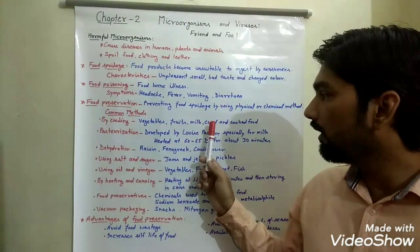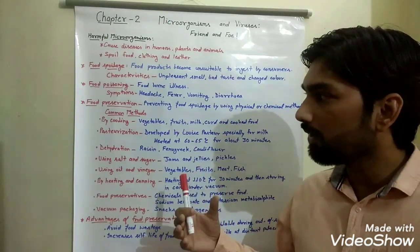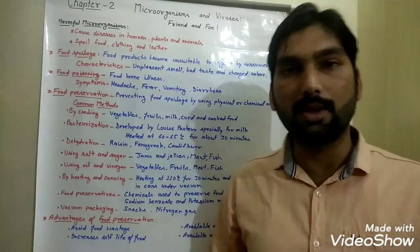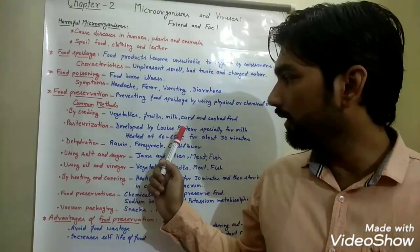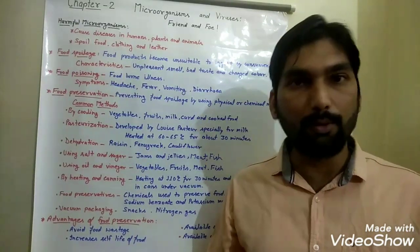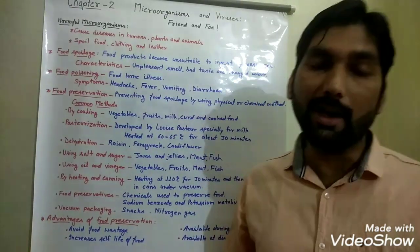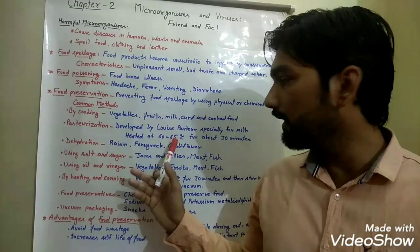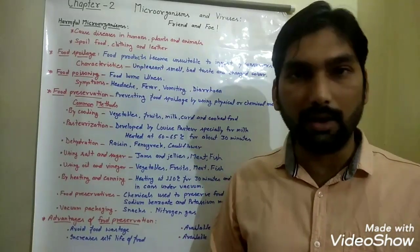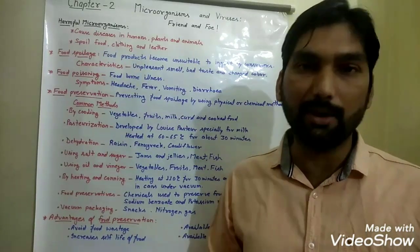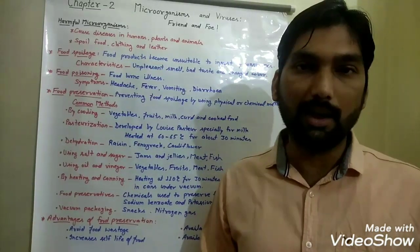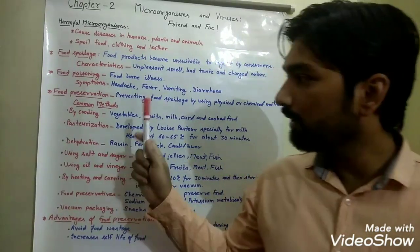Vegetables, fruits, milk, curd, and cooked food materials are protected by cooling. The next method is pasteurization, developed by scientist Louis Pasteur, originally to preserve milk but now used for many food products. In this method, food items are heated to about 60 to 65 degrees Celsius for about 30 minutes, then immediately cooled down to kill microbes and prevent new growth. The pasteurized milk available in the market, like Amul, is preserved by this method.